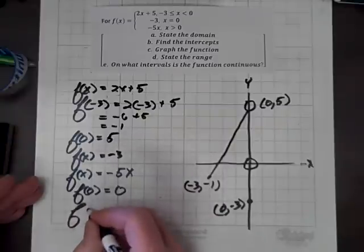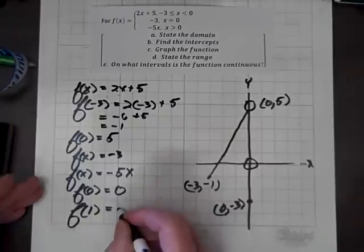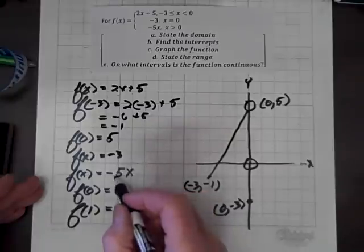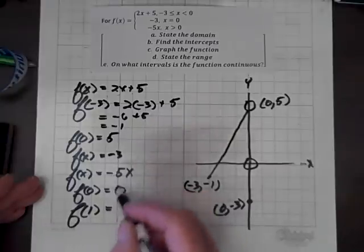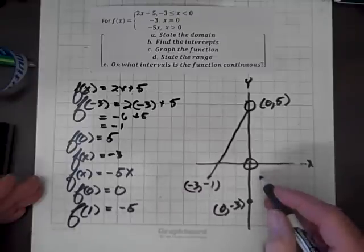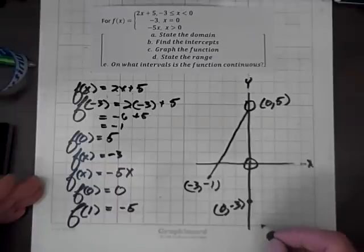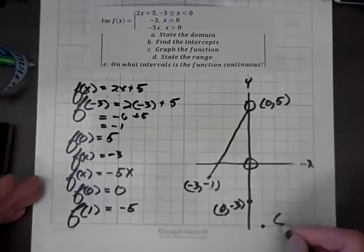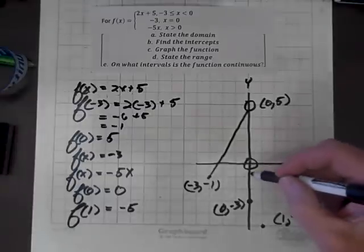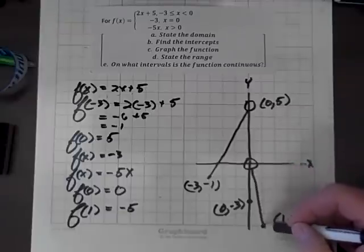Let's evaluate f(1): negative 5 times 1 is negative 5. So we have the ordered pair (1, -5), and we'll draw our ray from the origin through this point.